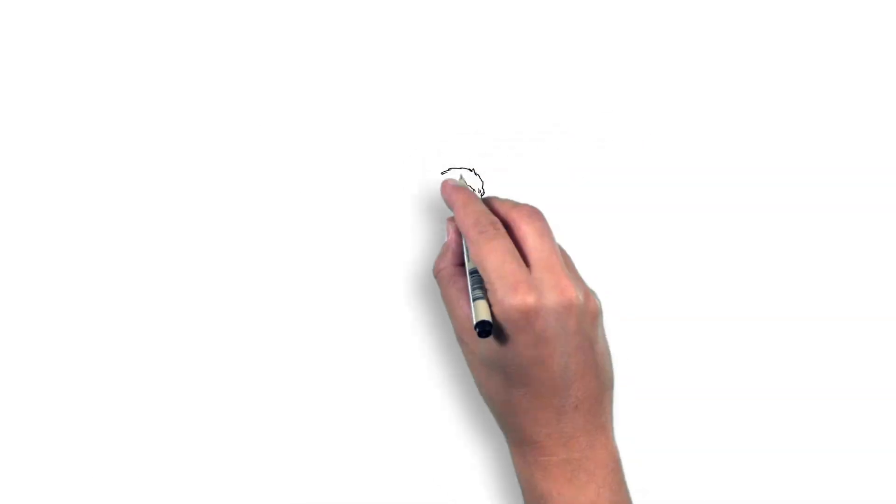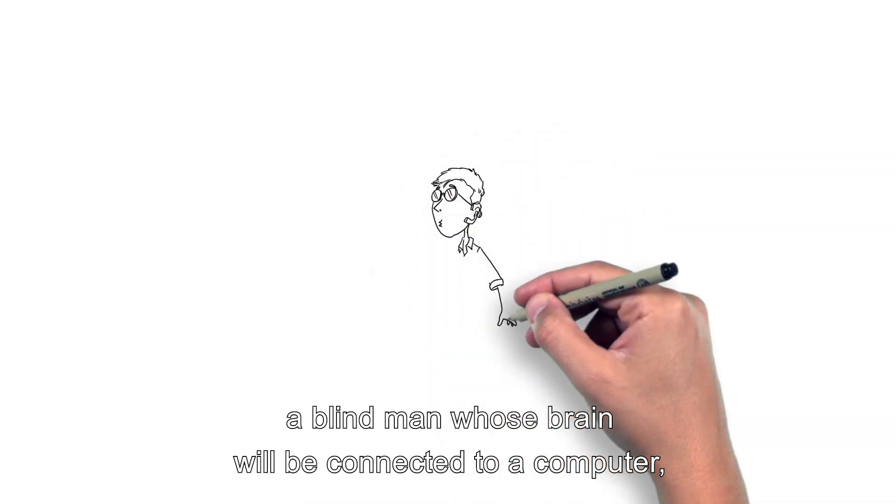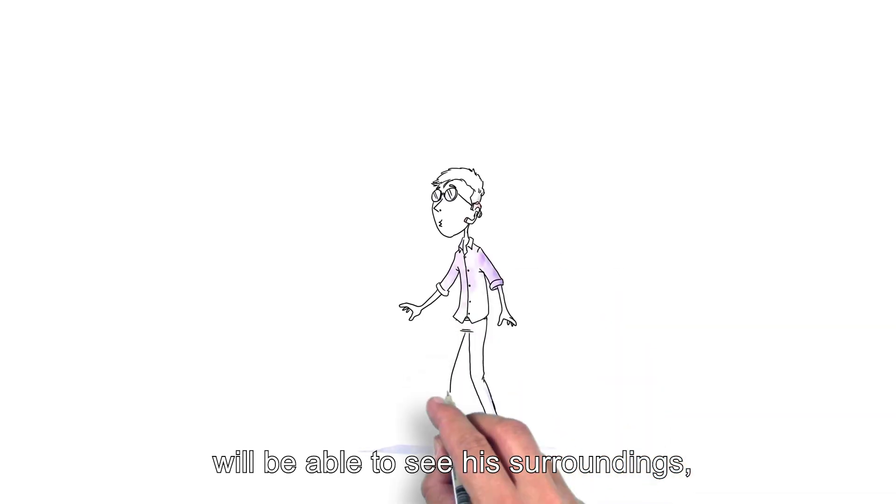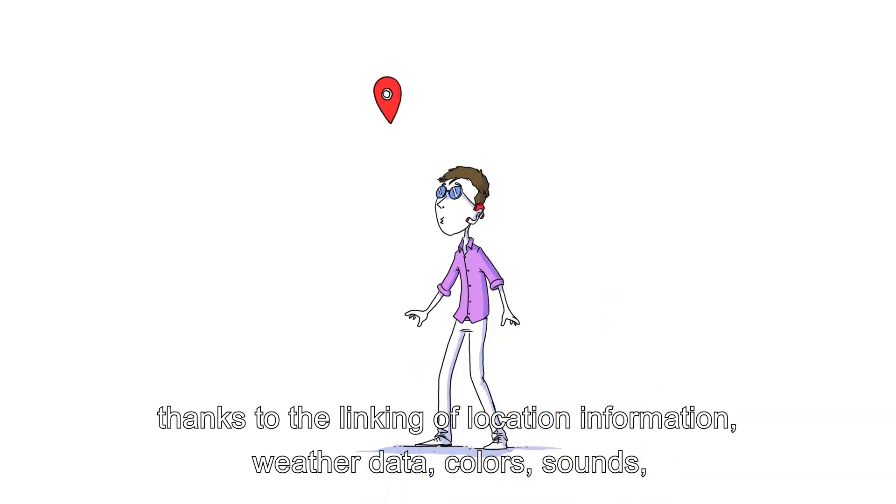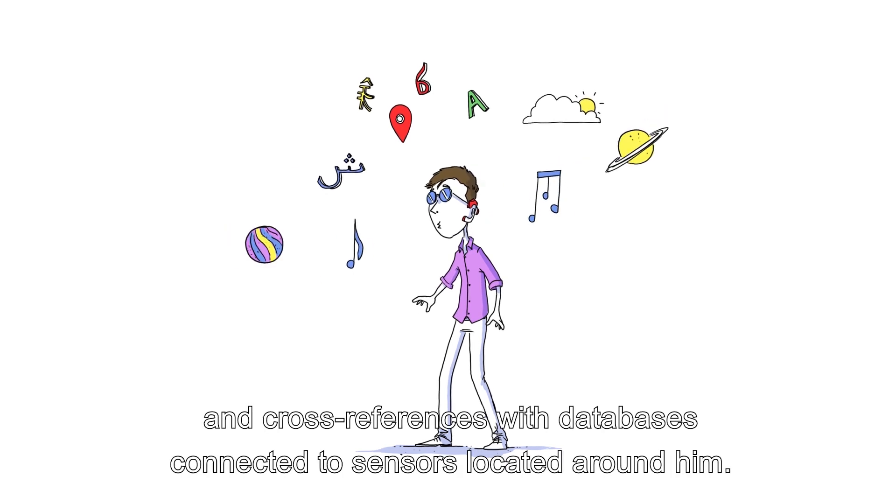For instance, a blind man whose brain will be connected to a computer will be able to see his surroundings thanks to the linking of location information, weather data, colors, sounds, and cross-references with databases connected to sensors located around him.